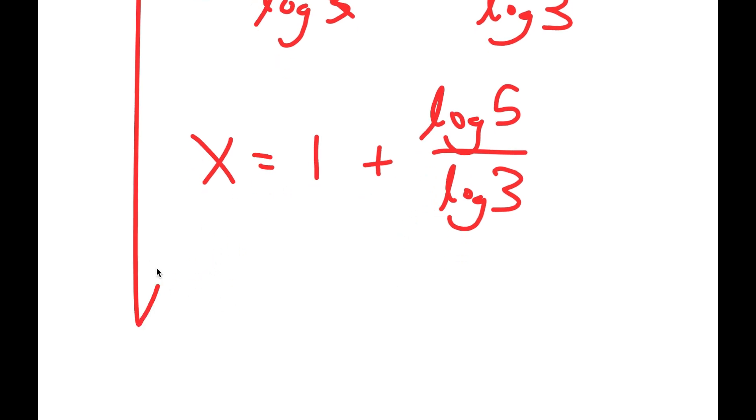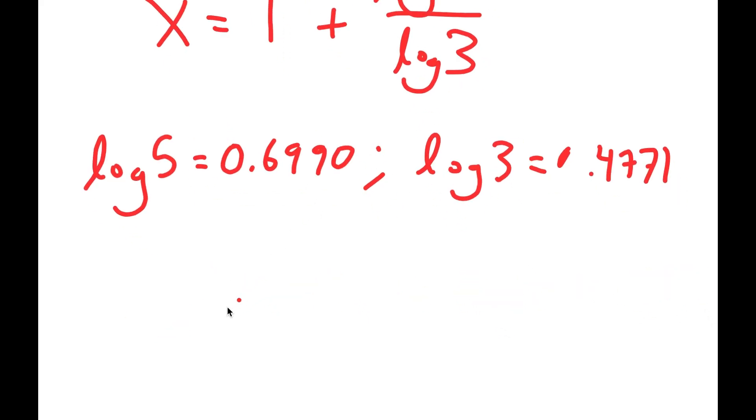Now log 5 is equal to 0.6990 and log 3 is equal to 0.4771.